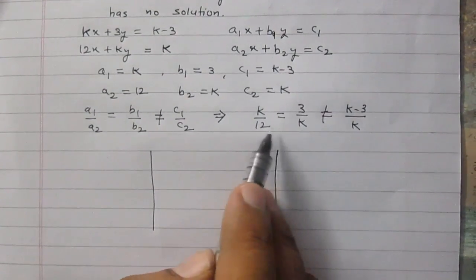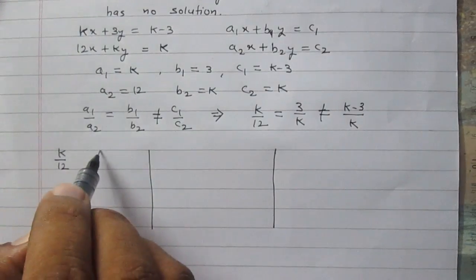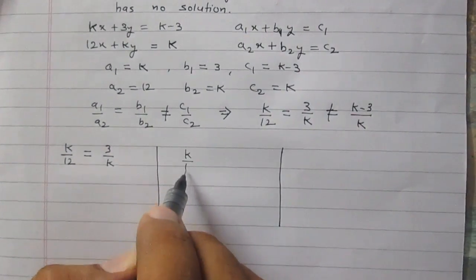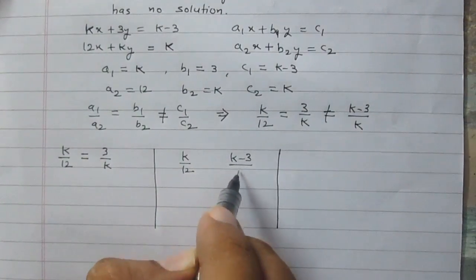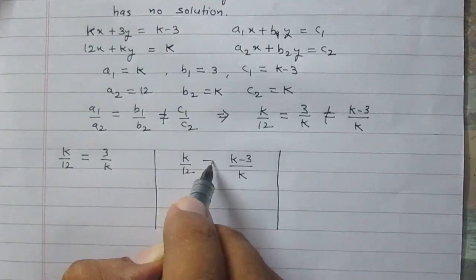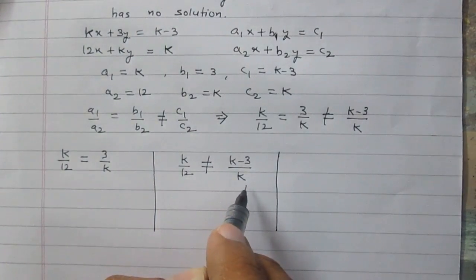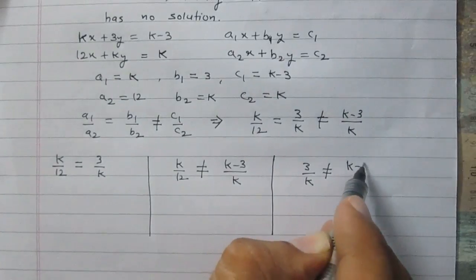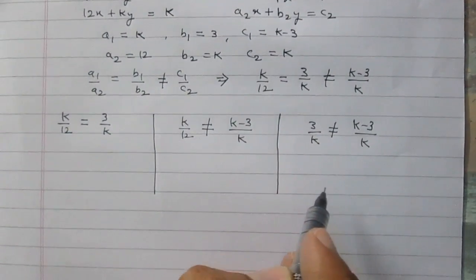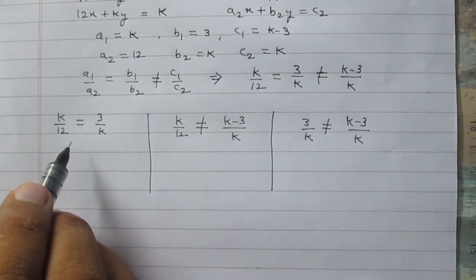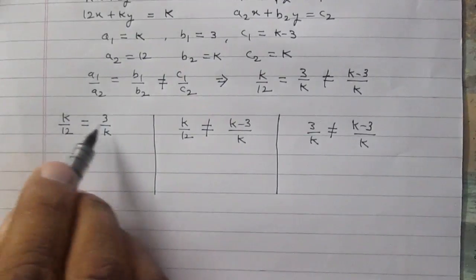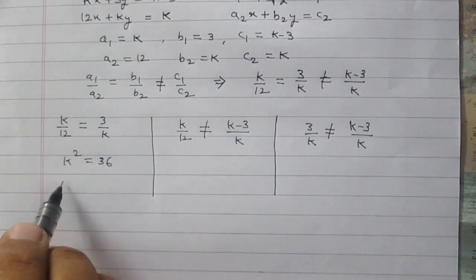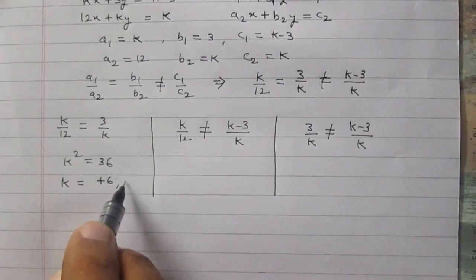We can understand this in three situations. In the first situation, we compare the first two parts: k/12 = 3/k. After cross multiplying, we get k² = 12 × 3 = 36, so k² = 36, which means k = +6 or k = -6.